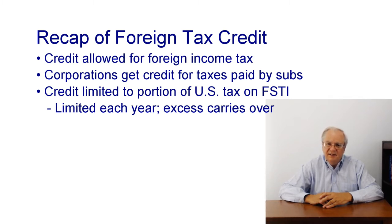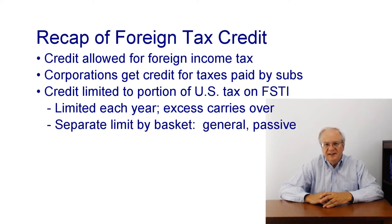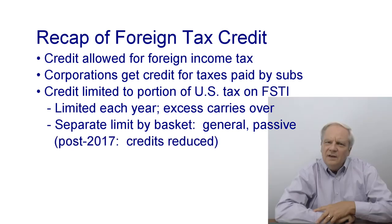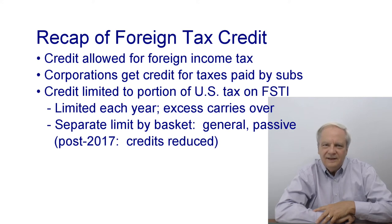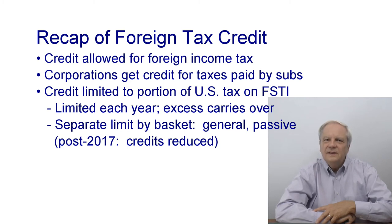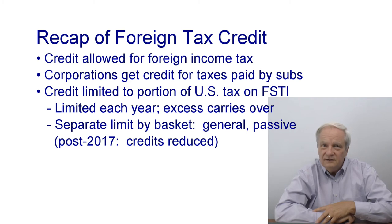A separate limitation is applied to each basket — currently there are only two baskets: general and passive. The 2017 law changes allow big deductions for some types of foreign income, introducing two new baskets. Foreign income taxes related to income giving rise to these deductions are reduced, and the limitation of the foreign tax credit is computed completely separately for these new baskets.